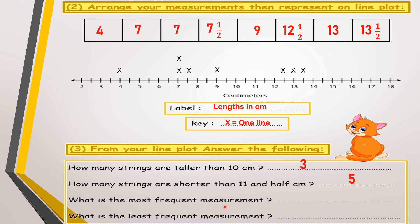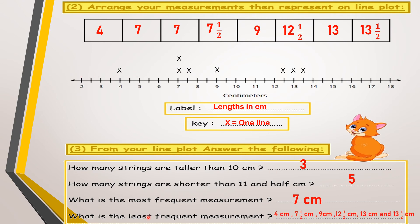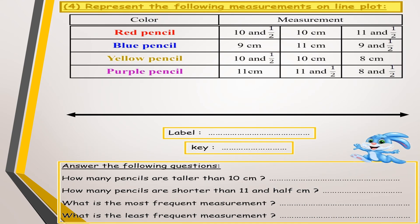Counting the marks before 11 and a half: 1, 2, 3, 4, 5 — so five strings are shorter than 11 and a half. What is the most frequent measurement? The most frequent means which measurement has the most X's. Seven centimeters is the only one with two X's, so seven centimeters is the most frequent. The least frequent measurements are the ones with only one X: 4, 7 and a half, 9, 12 and a half, 13, and 13 and a half — all equally the least frequent.